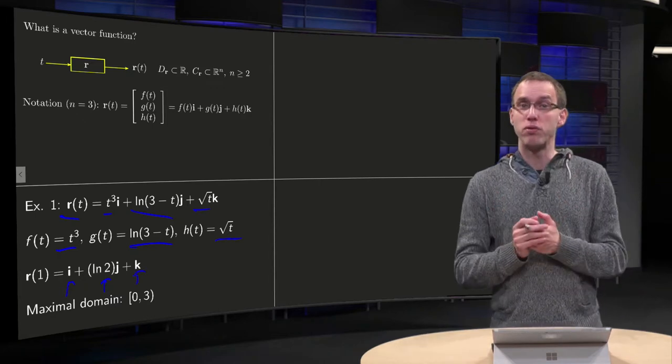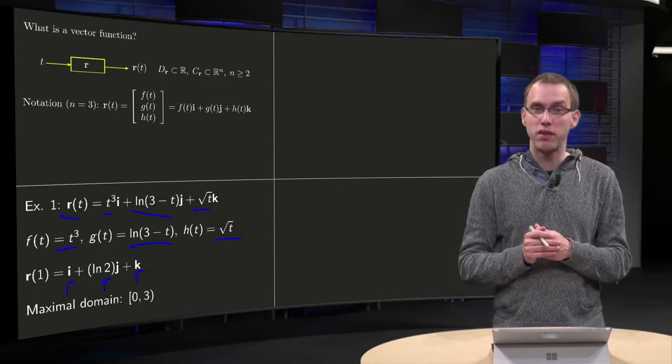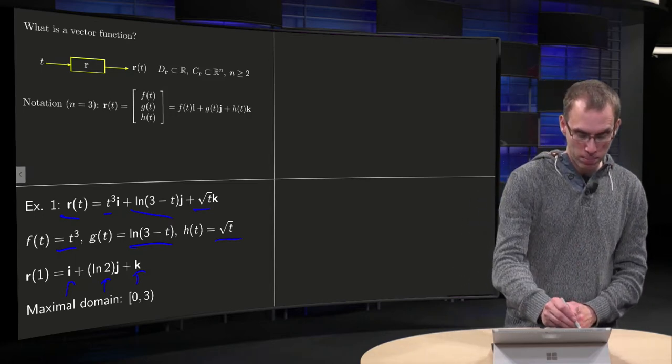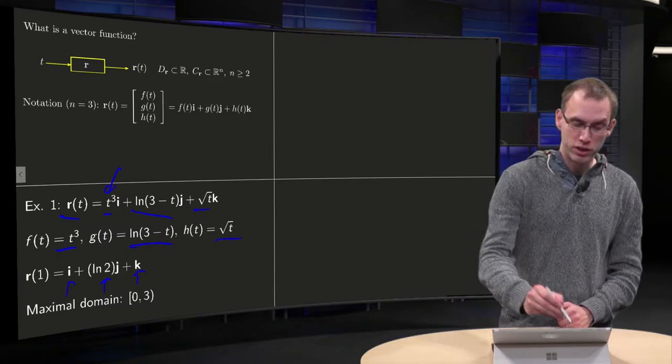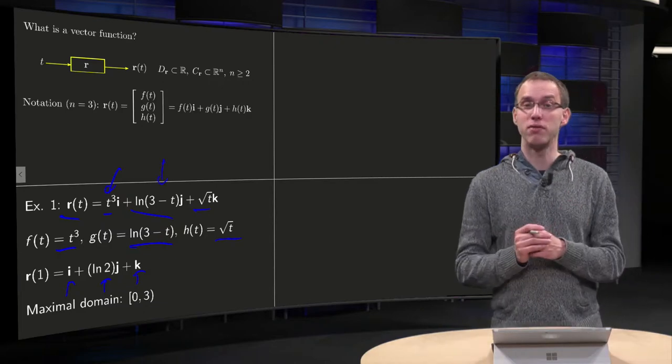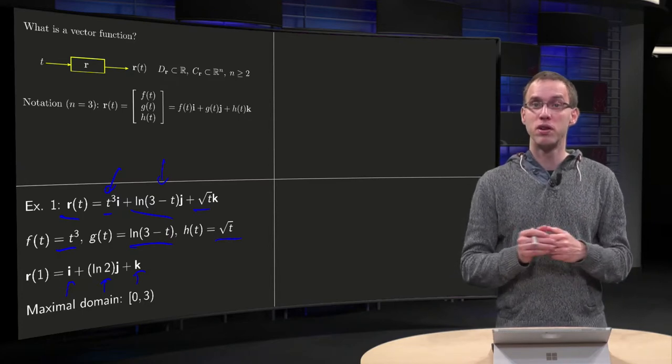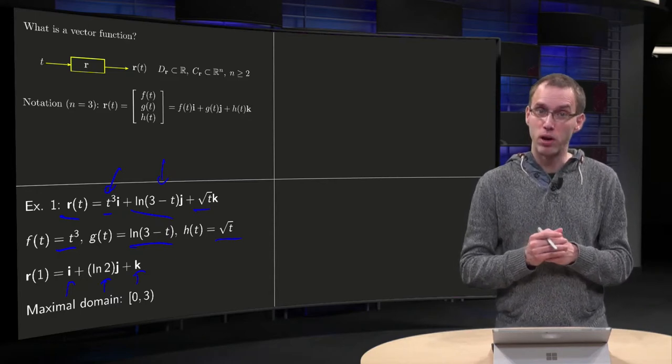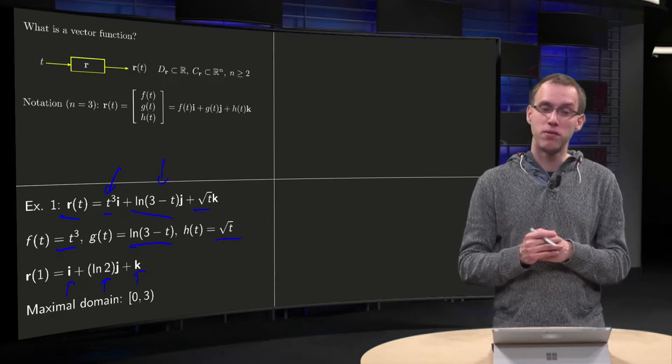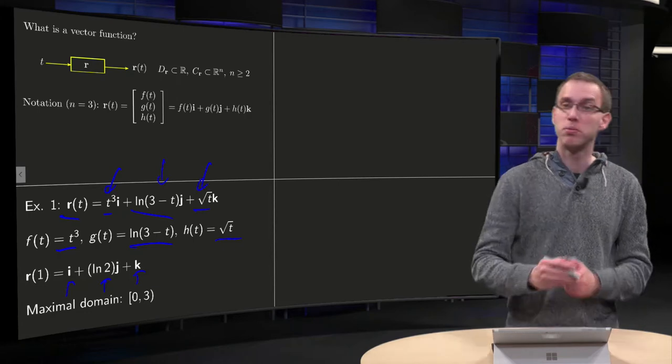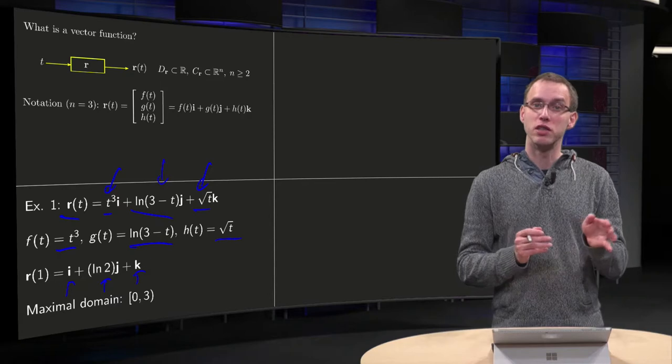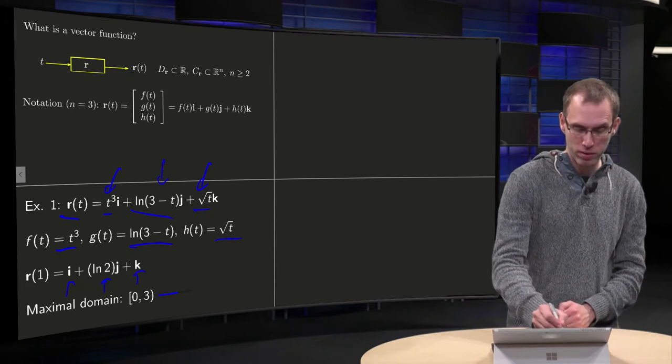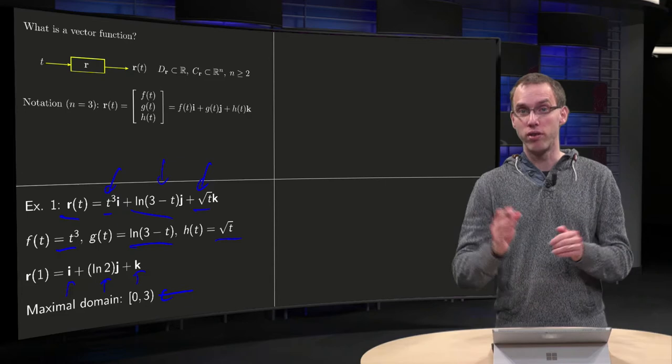And how does this work, for example, if we want to find the domain of such a function? So what functions of t can we plug in? Look at f, g, and h again. f is t³, we can plug in any t we like. For g we have the ln(3-t), so there we have to be careful, because the argument of the logarithm needs to be positive, so t can be 3 or smaller, otherwise your argument becomes negative. And the square root of t, we have to be careful as well. The argument of a square root has to be positive, so t has to be positive as well, so t has to be greater than or equal to 0 and smaller than 3, so our maximal domain will be the interval [0,3) with 0 included and 3 not.